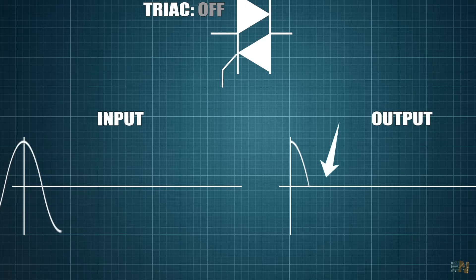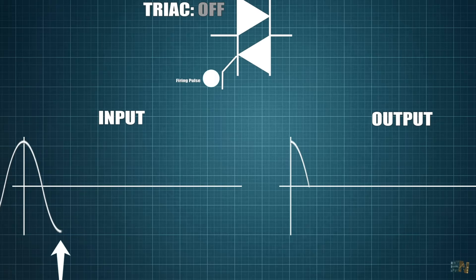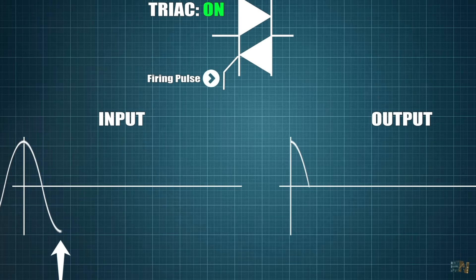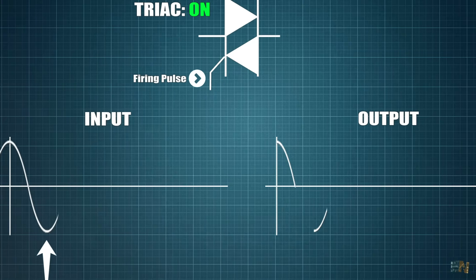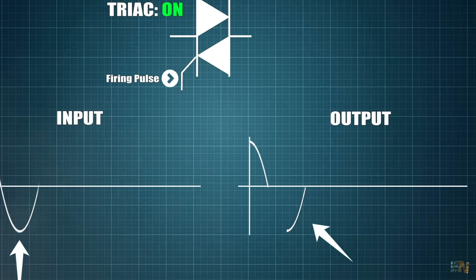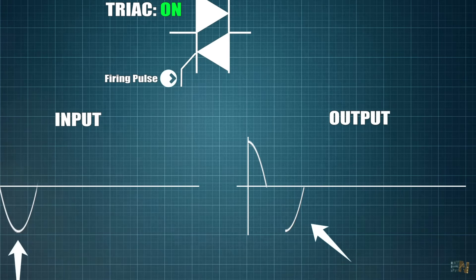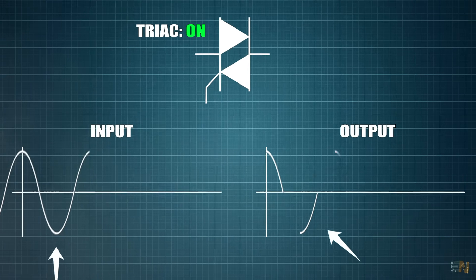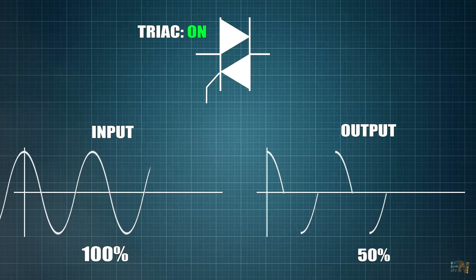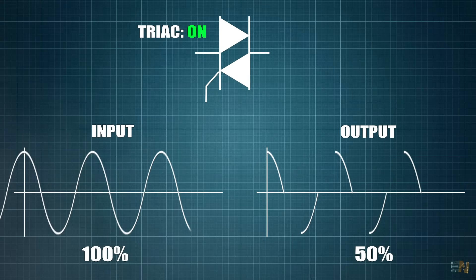But when the AC input voltage is at 270 degrees for example, I apply another pulse at the triac gate. So now the output will also have the other part of the negative AC voltage. So as you can see, the input is 100% of the power but the output is only 50% of the power because we have removed the other half of the wave.